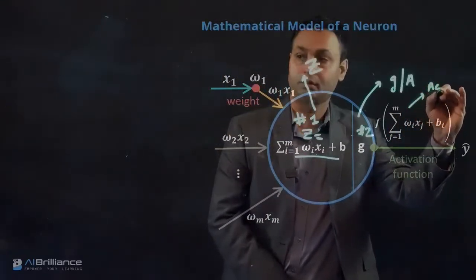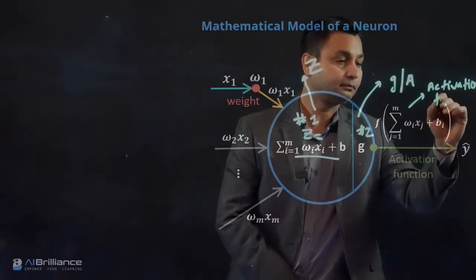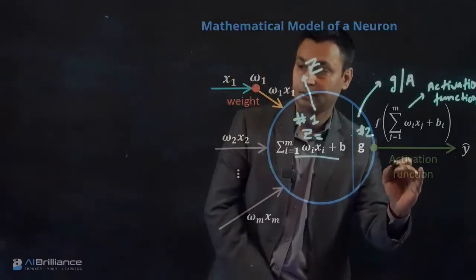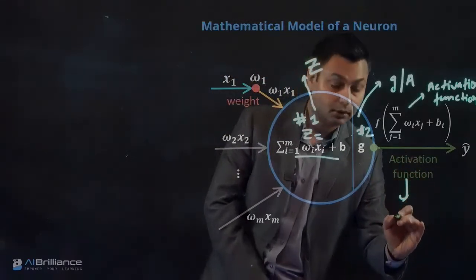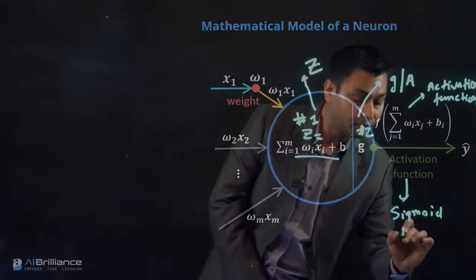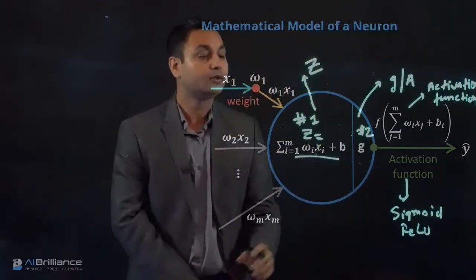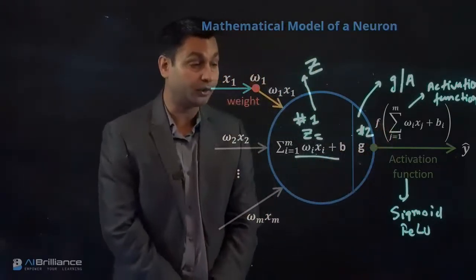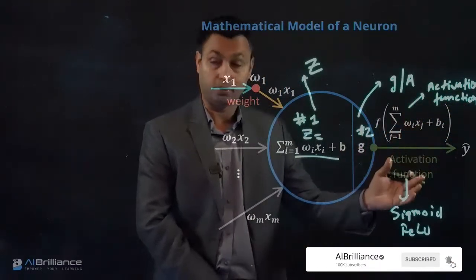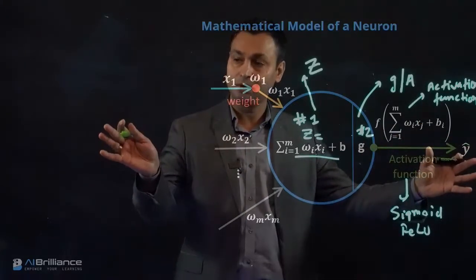So this activation function could be something like sigmoid or ReLU, and we will go through some examples of what are these kinds of functions. This is the second computation a neuron does, and this activation in the next layer becomes the input to other neurons, and we are connecting multiple different neurons to multiple other neurons in the overall network.